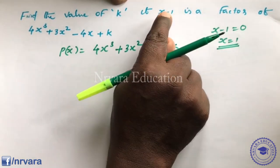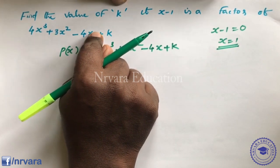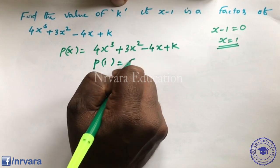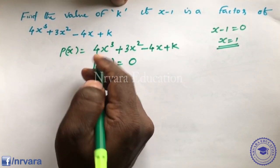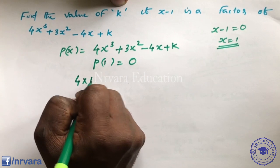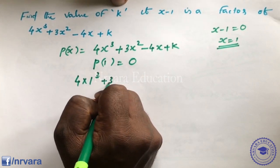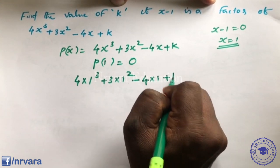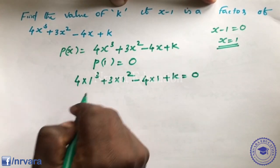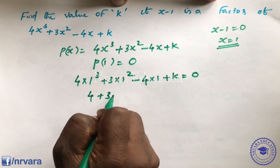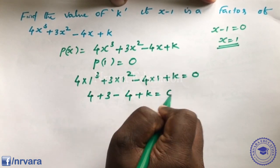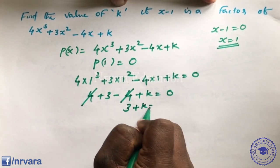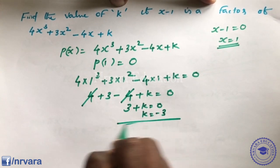Since (x - 1) is a factor, p(1) = 0. Substituting: 4(1) + 3(1) - 4(1) + k = 0, which gives 3 + k = 0, so k = -3.